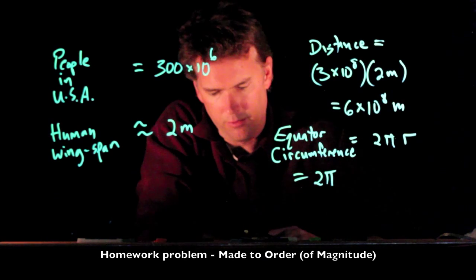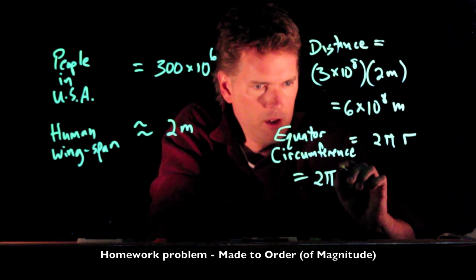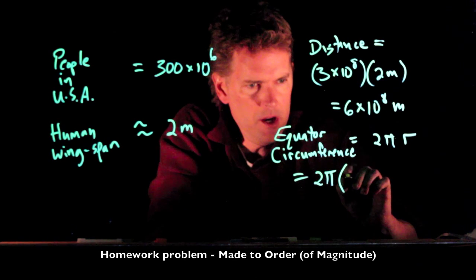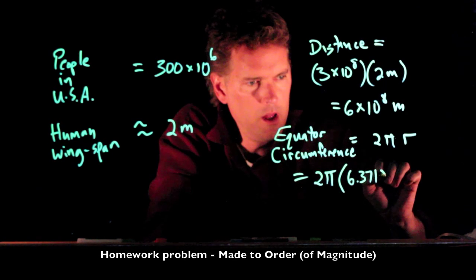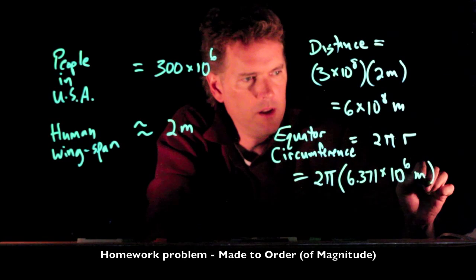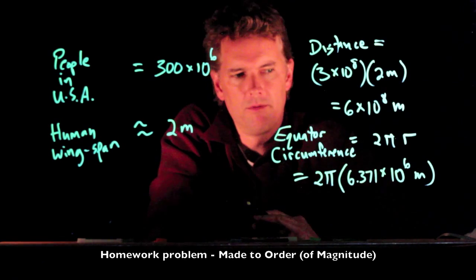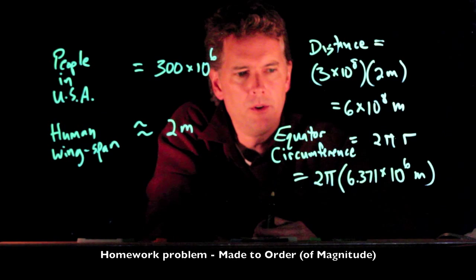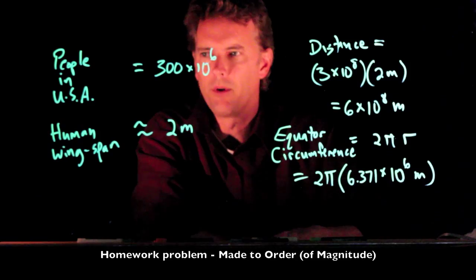The radius of the Earth is 6,371 kilometers, so we can put in a number of 6.371 times 10 to the 6 meters. That's fairly exact, and we don't need it quite that exact, so we're going to approximate these things with large numbers.